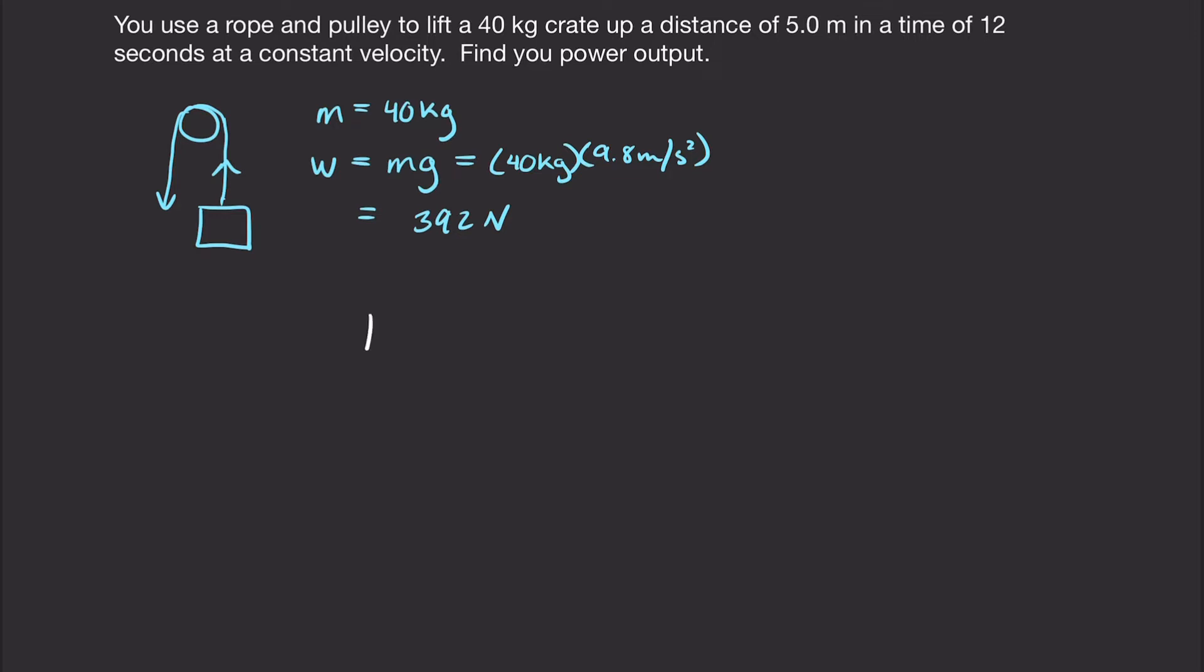So one of our expressions for power is power equals force times velocity. And we can see that we have a force, we have a weight, and then we're pulling on this pulley. So we might be able to find this force. And then it gives us a distance and a time. And so we should be able to get velocity. So velocity should be fairly easy. It's just distance over time. And so if we do 5 meters for our distance over time of 12 seconds, this is a speed of 0.417 meters per second.